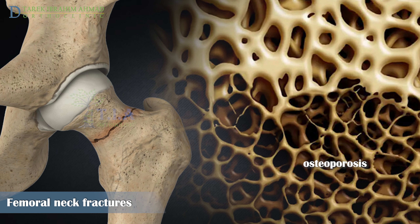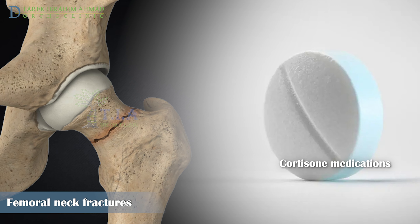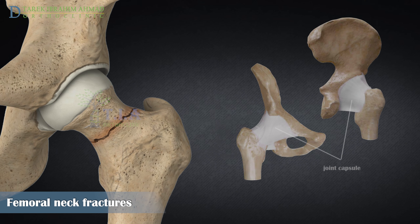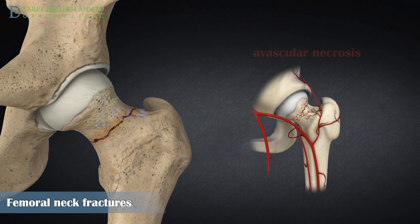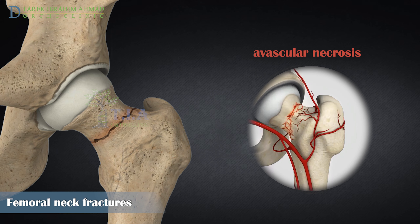The risk of hip fracture can be increased if you have osteoporosis. This condition weakens bones and makes them more likely to break. Cortisone medications can weaken bones if taken long term. Femoral neck fractures are intracapsular, placing them at higher risk for non-union than other hip fractures, because the femoral neck has a thin periosteum and the fracture is bathed in synovial fluid.